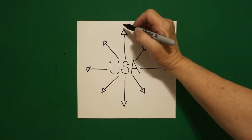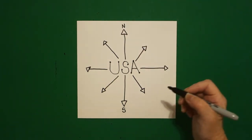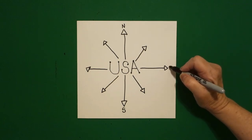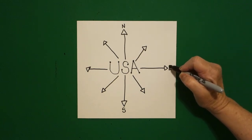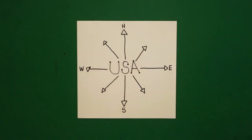Now we're going to label these. This is north, come down below, this is south, come over here on the right, this is east, and over here on the left is west.